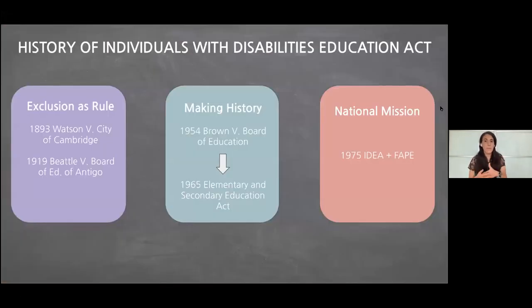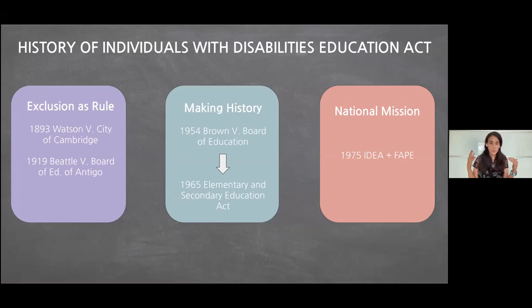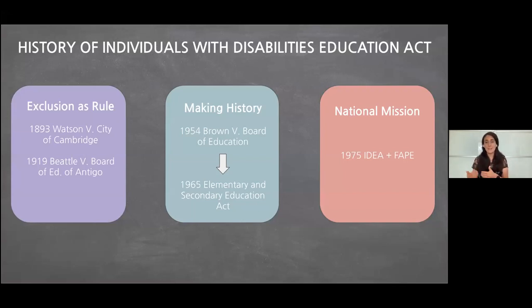We're going to start with the history of the Individuals with Disabilities Education Act, also known as IDEA. Prior to 1954, exclusion was really the rule. In any large system, nothing is ever perfect. But it's really important to remember just how monumental IDEA is and was when first enacted — to appreciate where we were and how far we've come, even though we still have more to do.